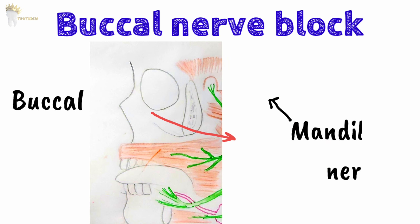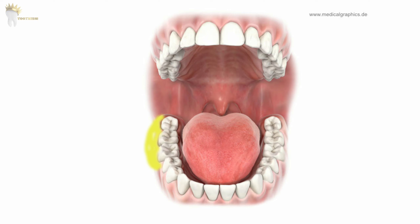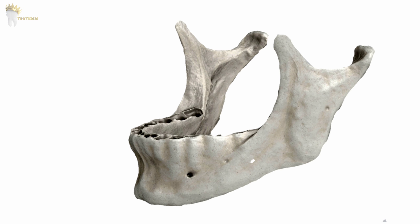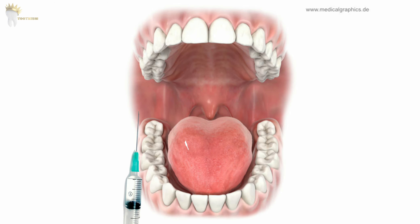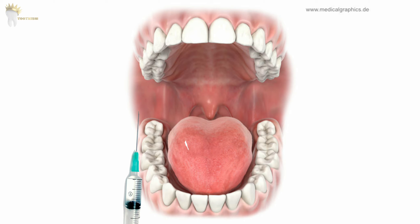When manipulation of buccal soft tissues is required, such as for third molar extraction, a buccal nerve block is administered right after the IAN block. The syringe is kept parallel to the occlusal plane, buccal to the teeth, with the bevel facing the bone. The mucous membrane distal and buccal to the last molar is penetrated and the needle advanced slowly until bone is gently contacted. Depth of penetration is usually only 1–2 mm, rarely over 4 mm. After negative aspiration, 0.3 ml is deposited slowly over 10 seconds.